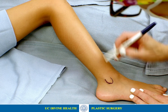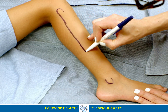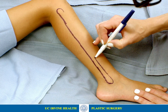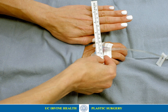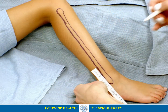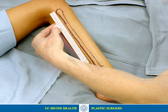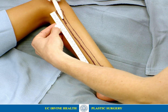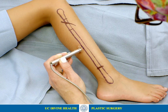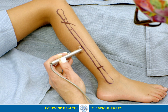Flap marking in pediatric cases also begins by identifying the distal and proximal fibular head and creating an axis line over the bone. However, in children with size discrepancies, a proportional scaling approach is used for measurements. A body part on the surgeon that is 7 centimeters is compared to the same anatomical reference point on the child and an appropriate conversion is made. Doppler can still be used to identify the perforators.